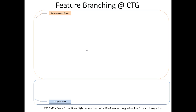CTG development teams follow feature branching, or branching by feature, methodology. This methodology helps two types of teams perform their daily jobs. The first type is our development team, whose job is to develop new sets of features for the client. There is also a support team whose main objective is to maintain and support the current client's website.